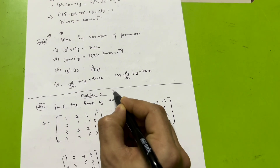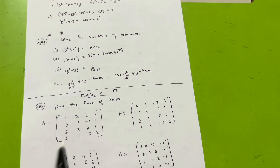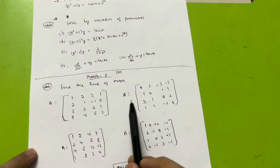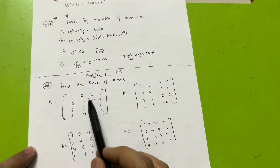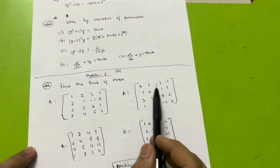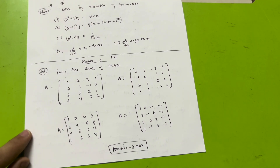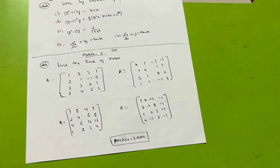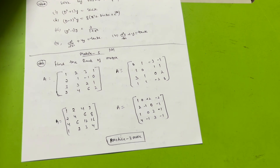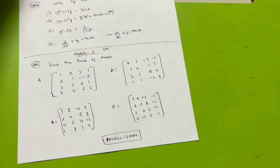Module 5 is again a passing module — Modules 1, 2, and 5 are passing modules where you can easily grab 20 marks each by practicing this much. Find the rank of the matrix: I have taken some sample matrices here as seven or eight marks questions. Rank of matrix is a simpler topic; I have already made a detailed video on it — go through it, understand the concept, then practice all the varieties.